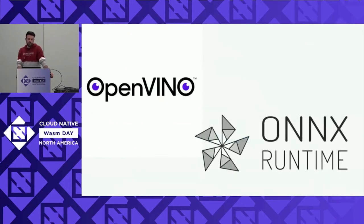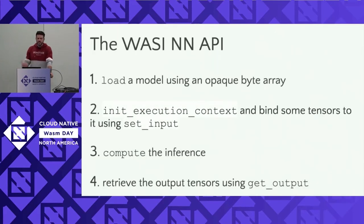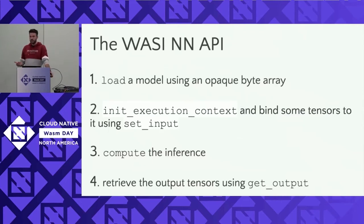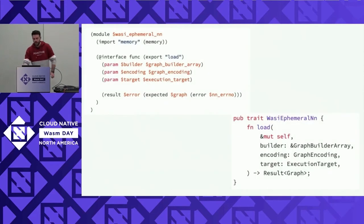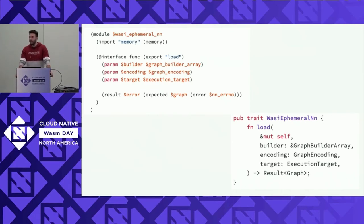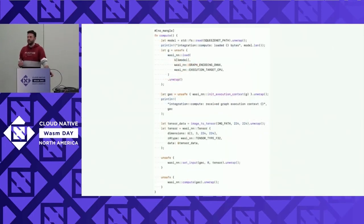The current implementations are for the OpenVINO model and the ONNX runtime. It's a pretty simple API: it lets us load an opaque byte array as a neural network model, initialize the execution context, and bind some inputs as tensors. We can compute the inference and then get the output tensor using a specific get-output result. The API is written in WITX, which means you can use code generation or manually write bindings. In essence, all you have to do is call the four main API functions that WasiNN gives you, and you can implement that for any WebAssembly runtime.